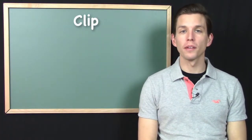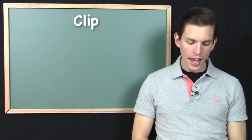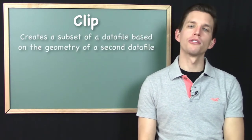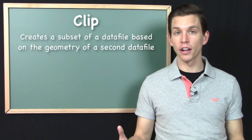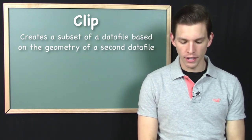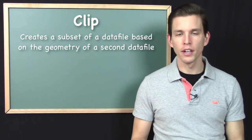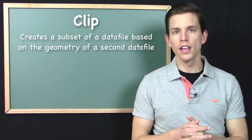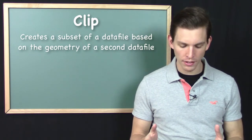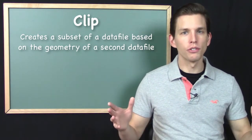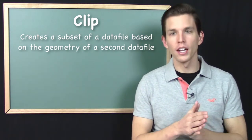In this lesson we're going to be talking about the CLIP operation. CLIP is one of our basic geoprocessing tools. Basically, what the CLIP operation allows you to do is create a subset of a large geographic dataset based on the geometry of a second dataset. We often use CLIP when we have a large vector dataset but a much smaller area of interest defined by another dataset, and we want that large dataset clipped down to the boundaries of just that area of interest.